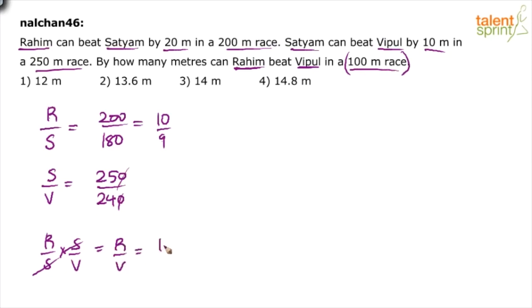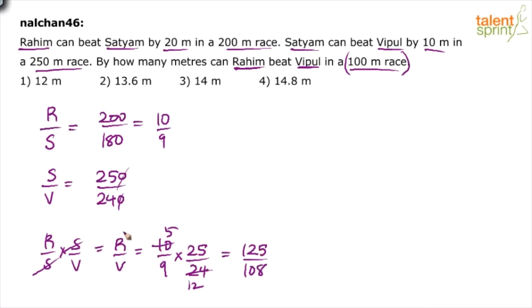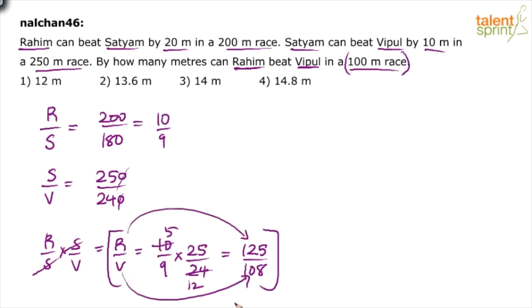So R by V = (10/9) × (25/24) = 250 by 216, which simplifies to 125 by 108. This means by the time Raheem travels 125 meters, Vipul will travel only 108 meters.